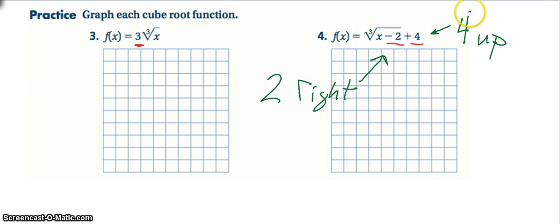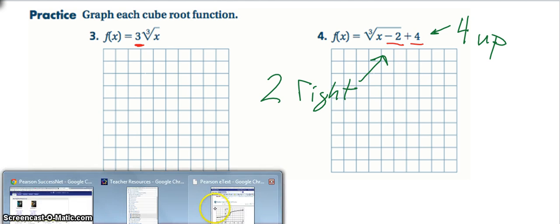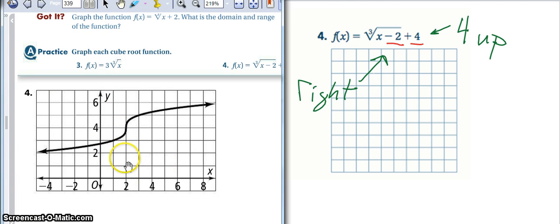So even in the cube root function, my inside the radical and my outside the radical still do exactly the same. So I'm told to take this graph 2 to the right and 4 up.